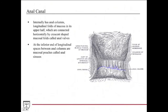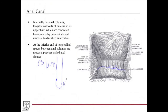The anal columns all end at a horizontal border called the pectinate line. At the most inferior end of these longitudinal folds are crescent-shaped folds of mucosa called anal valves. Within the spaces between the columns are mucosal pouches called anal sinuses, where stool can sometimes get caught. The valve can be thought of as almost the brim of the pouch, marking the terminal end of the space within these longitudinal spaces.